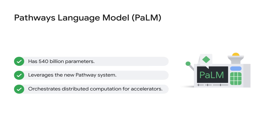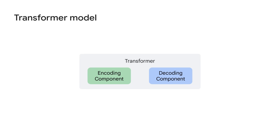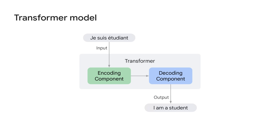The system enables PaLM to orchestrate distributed computation for accelerators. PaLM is a transformer model. A transformer model consists of encoder and decoder. The encoder encodes the input sequence and passes it to the decoder, which learns how to decode the representations for a relevant task.